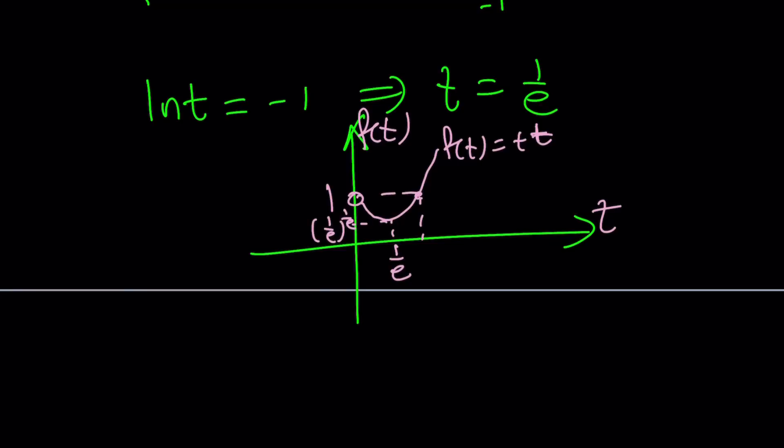You're only going to have a single intersection point. Basically, our function is increasing on 1 over e to infinity. Therefore, our number falls in that interval.